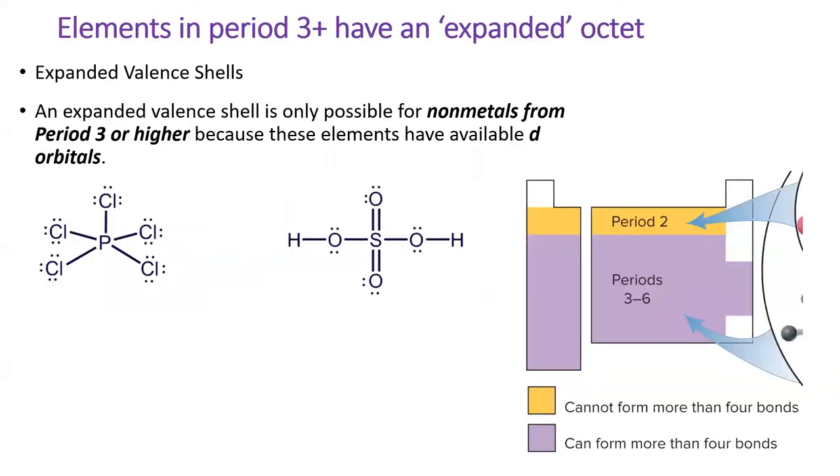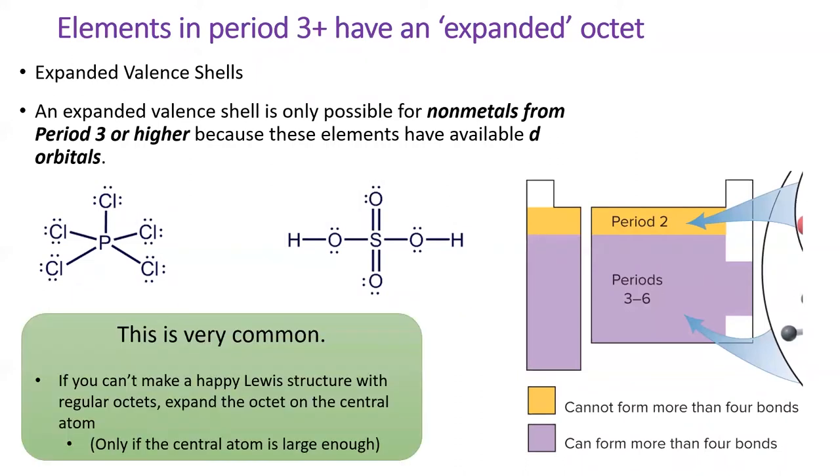The last exception is the most common and the most important to remember. Elements in period 3 and below can use their d orbitals to expand their octet. In practice, this means they can make up to 6 bonds or have up to 6 lone pairs. If your central atom is in period 3 or higher, and you can't make a happy Lewis structure with normal octets, it's okay to give the central atom some extra bonds or lone pairs.